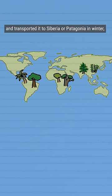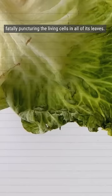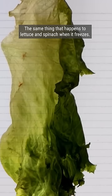If you took a tropical tree and transported it to Siberia or Patagonia in winter, its water would freeze into sharp-edged ice crystals, fatally puncturing the living cells in all of its leaves, the same thing that happens to lettuce and spinach when it freezes.